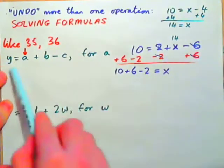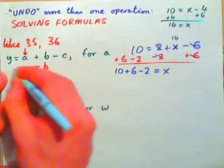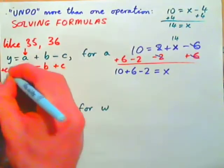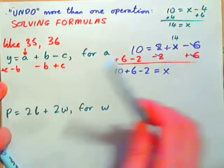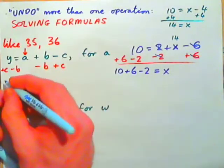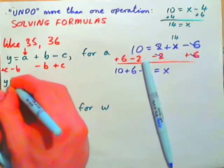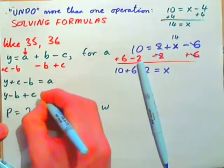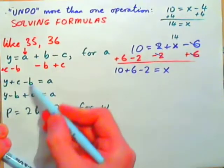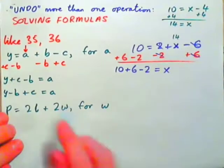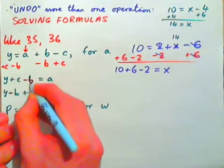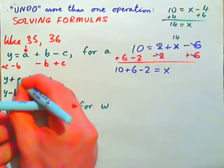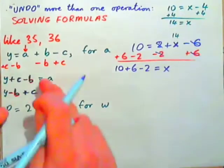So in this equation, to get A by itself, we could subtract B from both sides and at the same time add C to both sides. We get Y plus C minus B equals A, or equivalently Y minus B plus C equals A. These are the same because we have negative B and positive C in both cases.